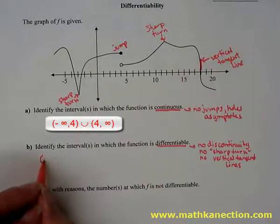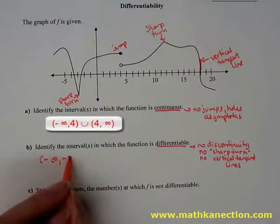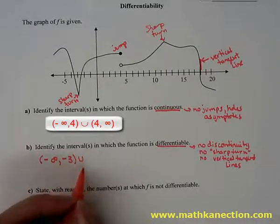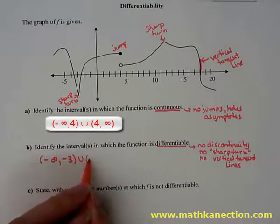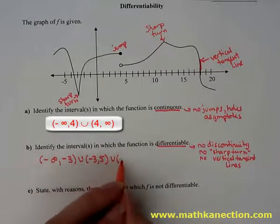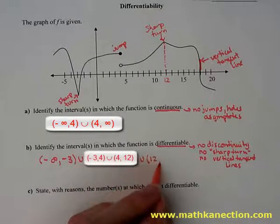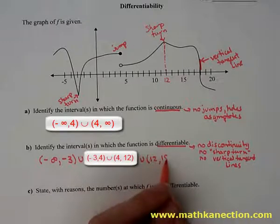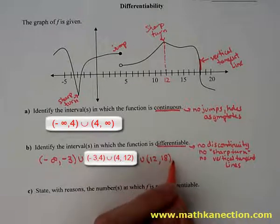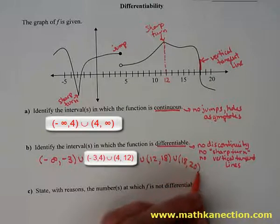The intervals in which the function is differentiable are from negative infinity to negative 3, where the sharp turn occurs, union negative 3 to 4, where the jump is, union 4 to 12, where approximately that next sharp turn occurs, union 12 to 18, where the vertical tangent line is, and then 18 to infinity or the end of the graph, which might be interpreted as 20.